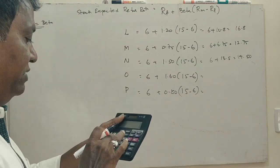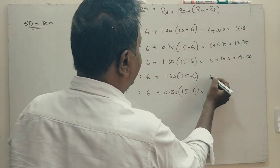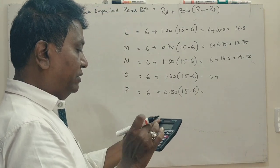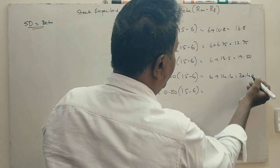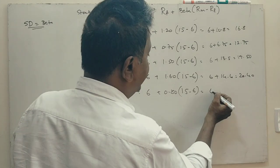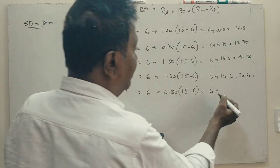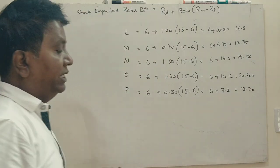I will check once again, 13.5 plus 6. Here, 6 plus 1.6 into 9 is 14.4. So total we get 20.4. Here, 6 plus 9 into 0.8 is 7.2. You get 13.20.